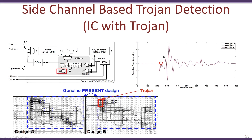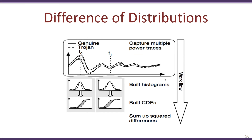Besides visually looking at the different power profiles, there are better statistical techniques that can be used. One of them is known as the difference of distributions. We look at the distributions for the golden circuit which has no trojan and the circuit which has the trojan, and monitor the difference between them. Various statistical techniques like CDFs and sum of squared differences are used to identify differences between the power profiles. If these differences exceed a certain threshold, we can conclude that a trojan is present. While these techniques are still in a very early stage of research, there is still a lot being done to detect trojans on a completed or fabricated IC.